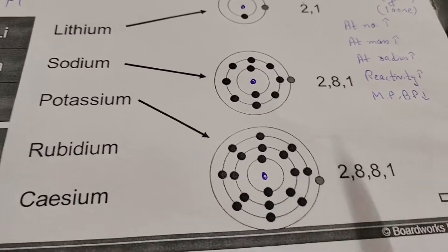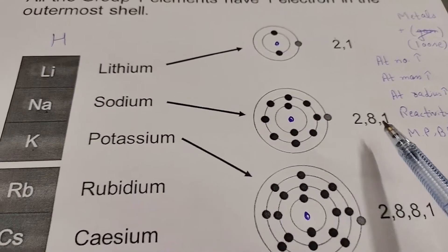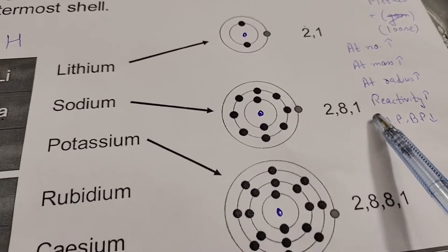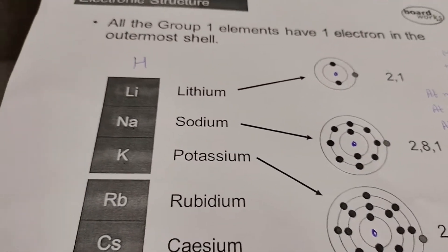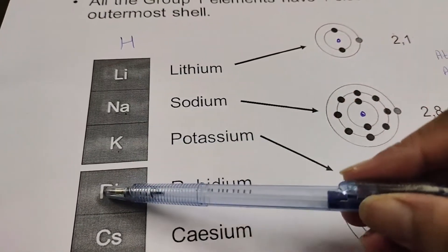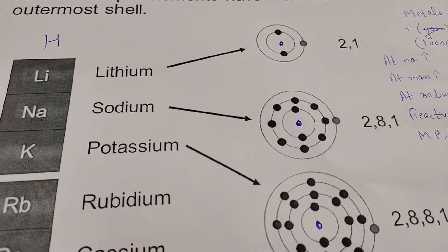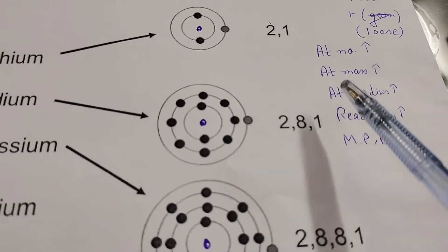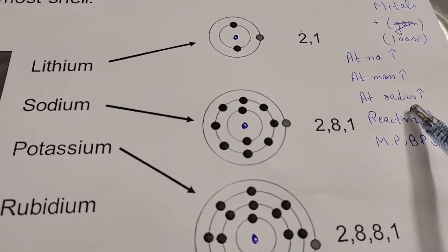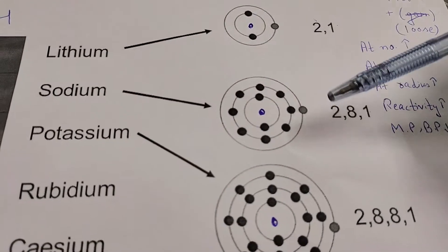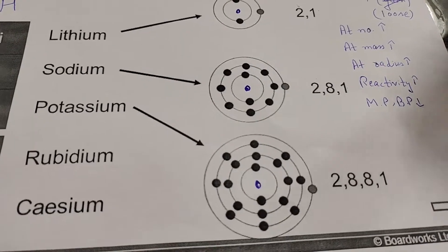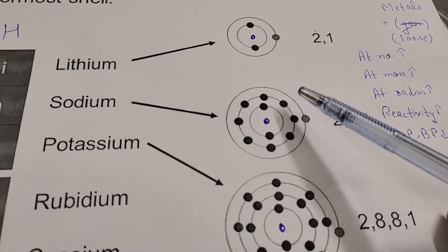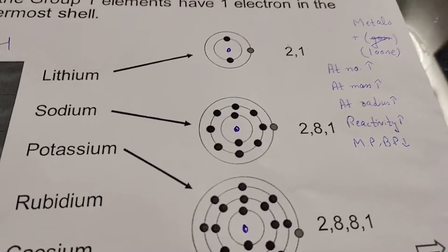If someone gives you an electronic configuration with only one electron in the last shell, you can say it belongs to group one. As we move downwards, atomic number and atomic mass both increase. Atomic radius also increases — in lithium we have two shells, in sodium three shells, and in potassium four shells, so the distance between the nucleus and the outermost shell increases.